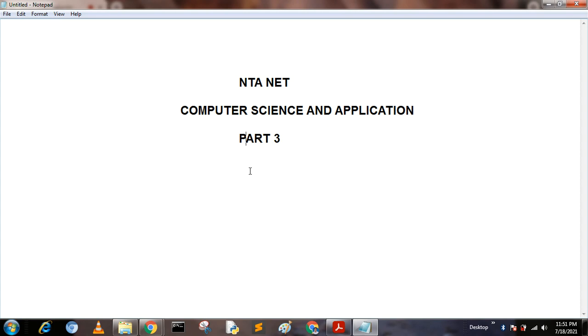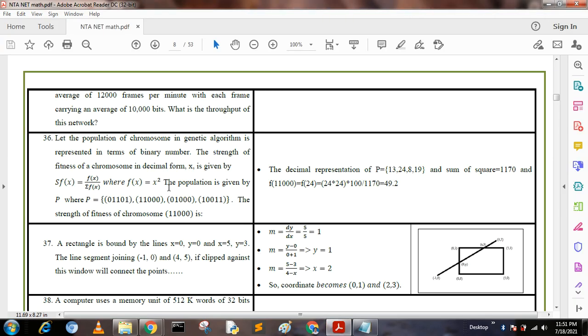Now I am going to discuss the remaining portions. Question number 36: Let the population of chromosomes in genetic algorithm be represented in terms of binary numbers. The strength of fitness of a chromosome in decimal form x is given by s(fx) = fx / summation of fx where fx = x squared. The population is given by P = {01101110, 00010001, 00000000, 00000011}. The strength of fitness of chromosome 11100000 is: